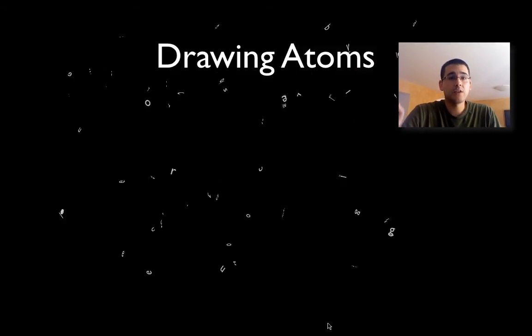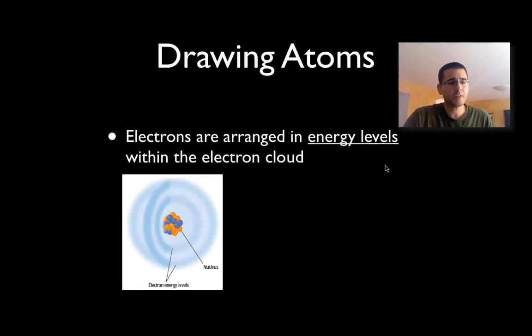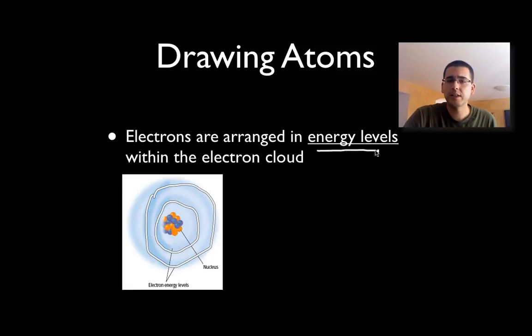Before we get started with our actual drawings, you're going to need to write down this statement: Electrons are arranged in energy levels within the electron cloud. If we look at this picture, these orange and blue dots in the center, we call that the nucleus of the atom. Also, you notice these bands, these rings. We call these energy levels. In this case, I can see one there and two there. So in this particular atom, it has two energy levels.